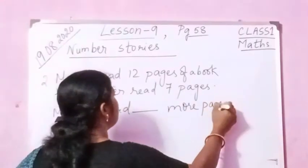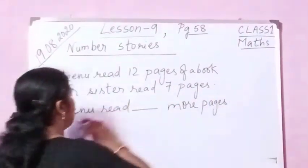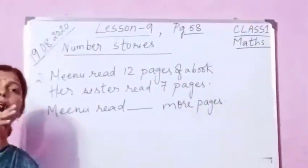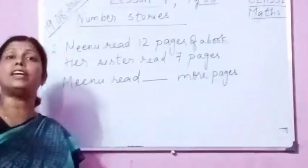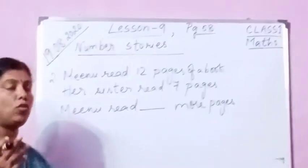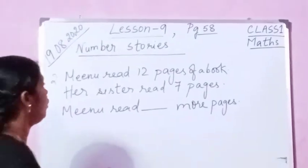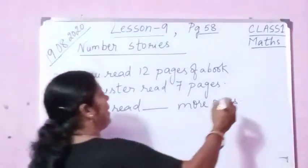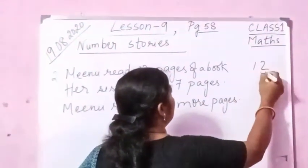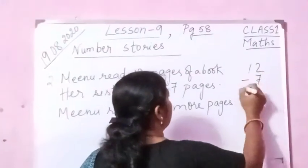What is the meaning? The meaning is: how many pages did Minu read more? That is the meaning. So you see here — 12 minus 7. We are going to do 12 minus 7.